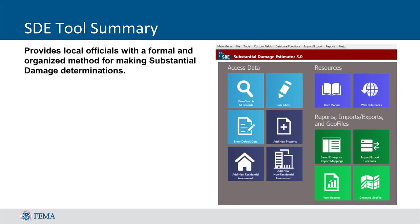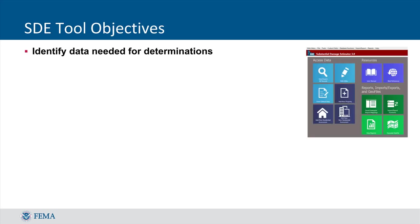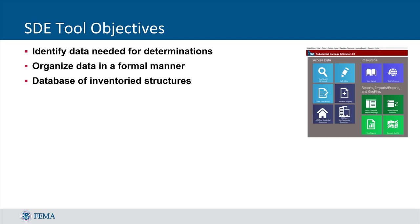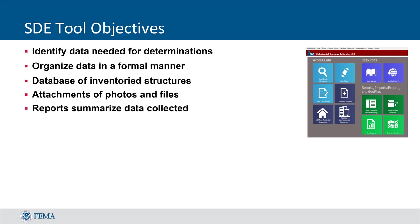One of the best things about the SDE tool is that it acts as an organizing platform for all the substantial damage data that a community needs to collect on structures after a major event. Since it is designed specifically for collecting substantial damage information, the data is organized into an easily reviewable format that is conducive to making determinations of whether a structure has been substantially damaged. Objectives for using the tool include identifying data that needs to be collected, recording that data in a formal and organized manner, housing a database of inventoried structures, providing a repository to store photos and other files, creating reports that summarize the data and calculations, and meeting NFIP requirements related to performing substantial damage determinations.